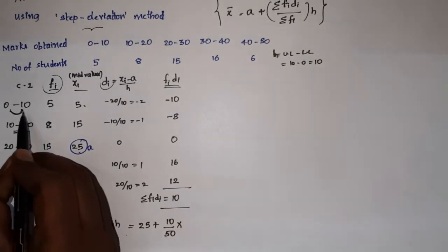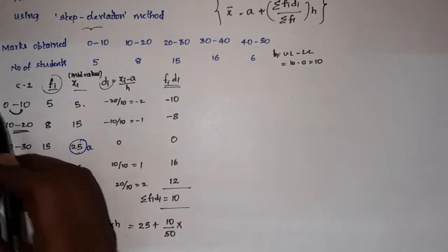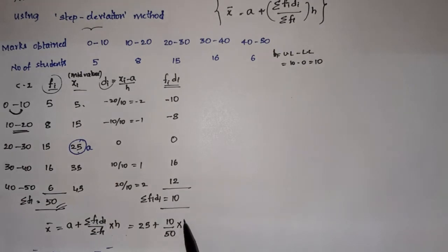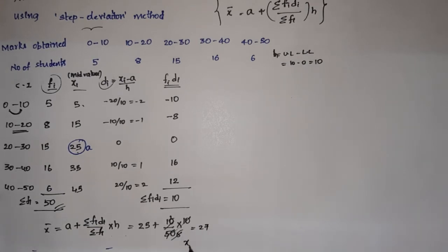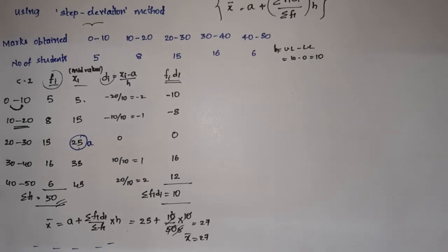H is the class interval gap, upper limit minus lower limit = 10. So x̄ = 25 + (10/50) × 10 = 25 + 2 = 27. The mean is 27.